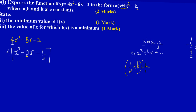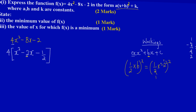Let me calculate that quickly. By comparison, my b is -2. So I take half of b: ½ × (-2) = -1, and then I square that: (-1)² = 1. So the value we will use to complete the square is 1.